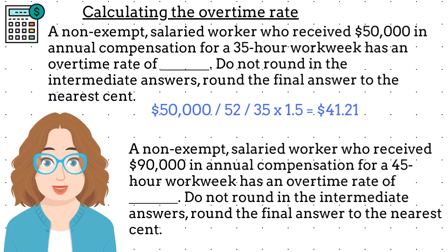Let's try another example. In this example, we have a non-exempt salaried worker who received $90,000 in annual compensation for a 45-hour workweek. What is his overtime rate? Do not round in the intermediate answers; round the final answer to the nearest cent. We again start with the annual compensation of $90,000 and divide it